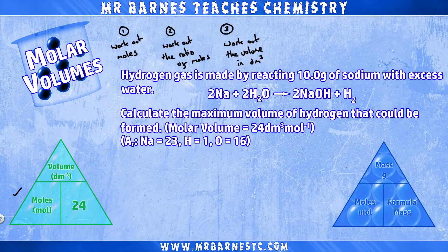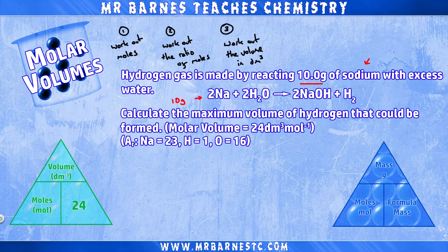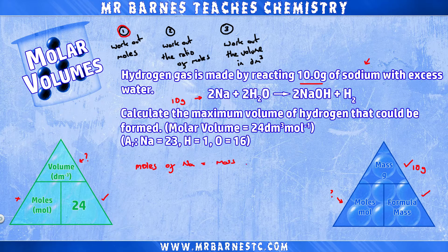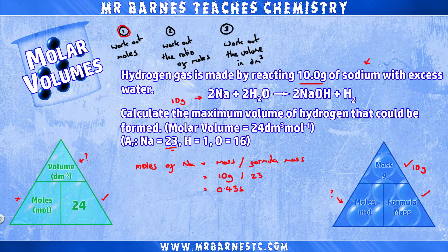One final example: what happens if we don't have a ratio of one to one? Hydrogen gas is made by reacting 10 grams of sodium with excess water. Calculate the maximum volume of hydrogen that could be formed, given molar volumes and atomic masses. Step one: moles = mass ÷ formula mass = 10 ÷ 23 = 0.435 moles of sodium. I use 23 rather than 46 because I'll handle the ratio separately.